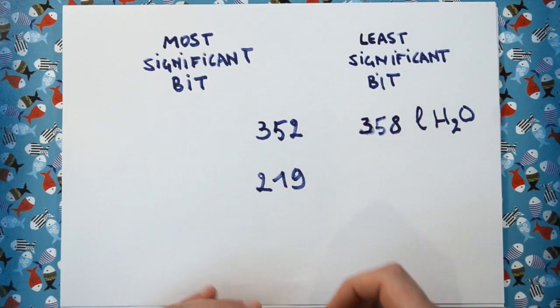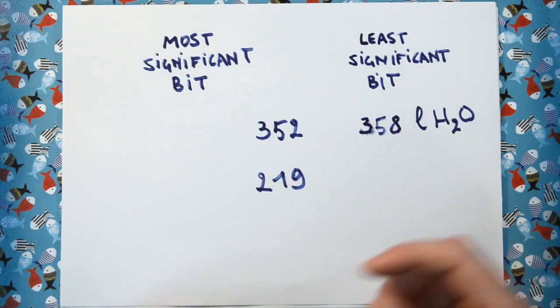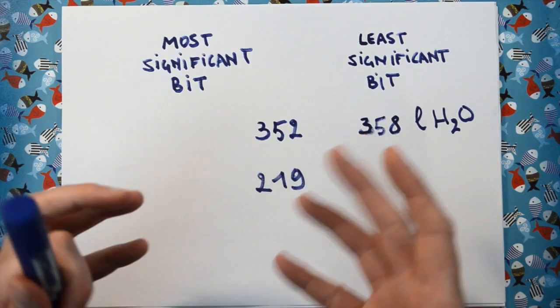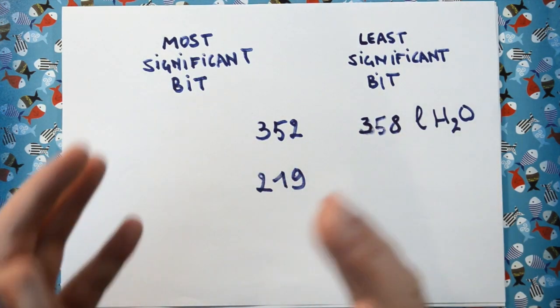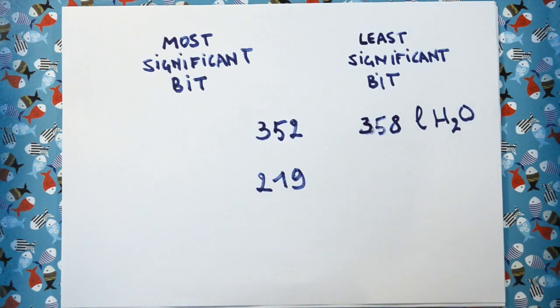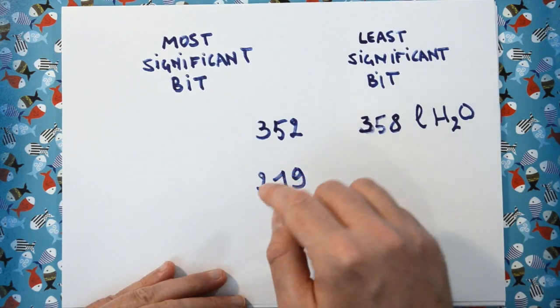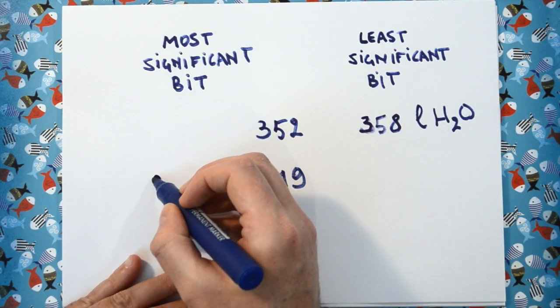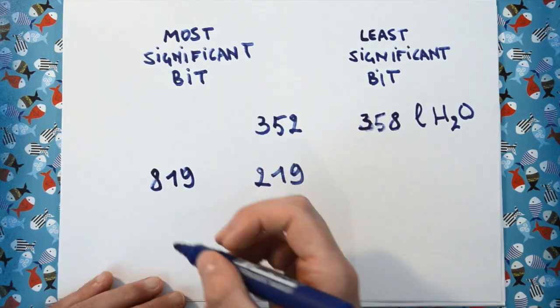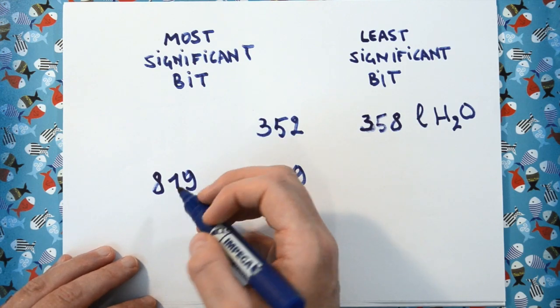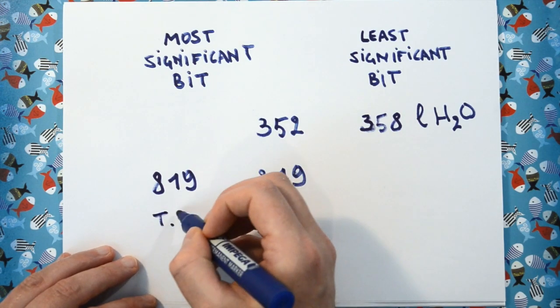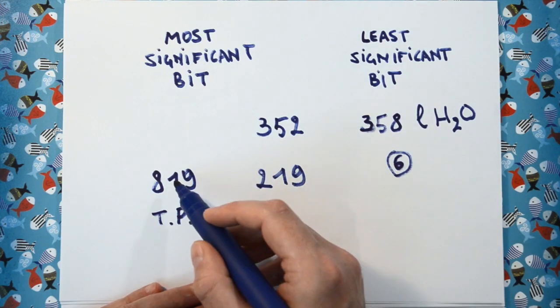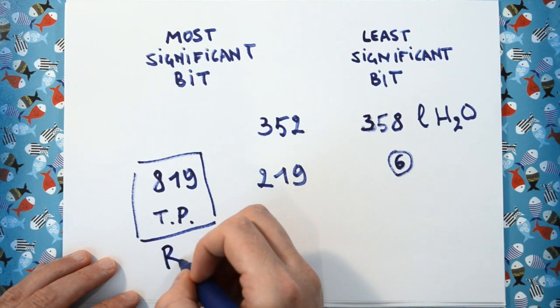Now imagine this next number is the amount of rolls of toilet paper there are left. And instead of writing 219, I somehow get distracted again. And don't ask me why, I have no idea. But this time I also replace the 2 by an 8. So instead of 219, I write down 819. So that's 819 rolls of toilet paper. I made a mistake for the most significant bit. Now this, this will cause a riot.